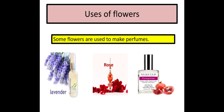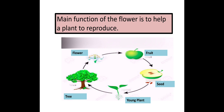But what is the main function of a flower? Flower ke andar seeds hoti hai, and those seeds germinate into a new plant. So main function flower ka: flower helps a plant to reproduce. Reproduce means to have more plants like the adult one. And how a flower becomes a fruit? Seeds are inside the fruit, and these seeds turn into a young plant, and then that young plant turns into a tree. Main function of the flower is to help a plant to reproduce.